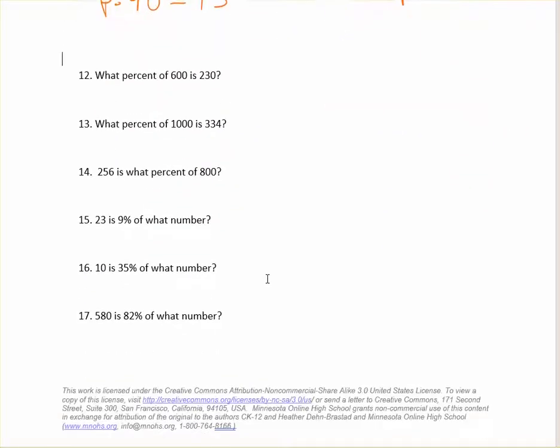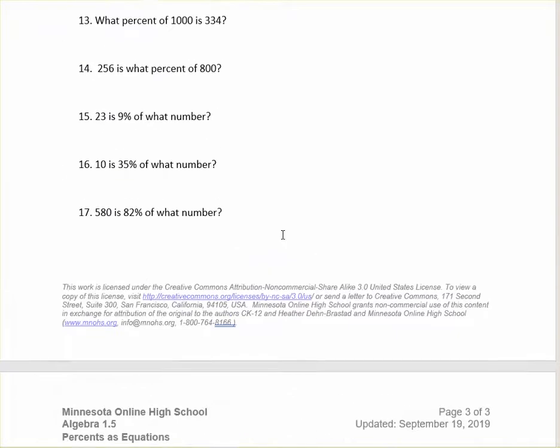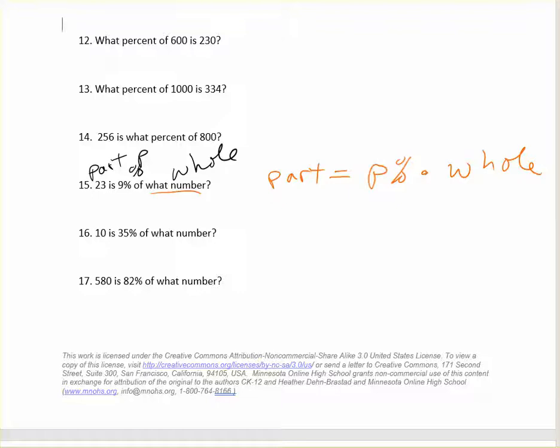There's one more type when we are looking for the whole. So 15, 16, 17, and I think those three plus maybe one or two of the word problems at the end, you're looking for the whole. So if the part is equal to the percent times the whole, that's the whole part that we're looking for in these ones. So this would be the part. And this, of course, is the percent. And then we're looking for the whole. So the equation: 23 is, means equals, nine percent as a decimal. Be careful on this one.